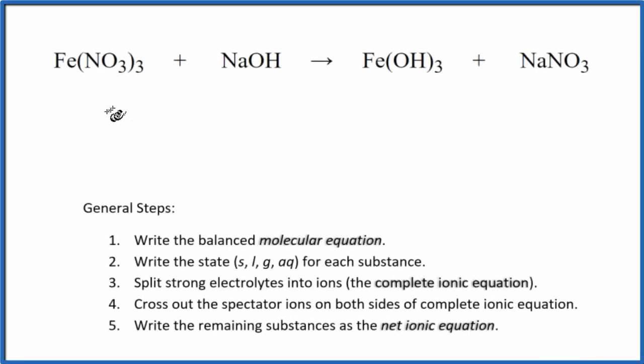In this video, we'll write the balanced net ionic equation for Fe(NO3)3 plus NaOH. This is iron 3 nitrate plus sodium hydroxide.